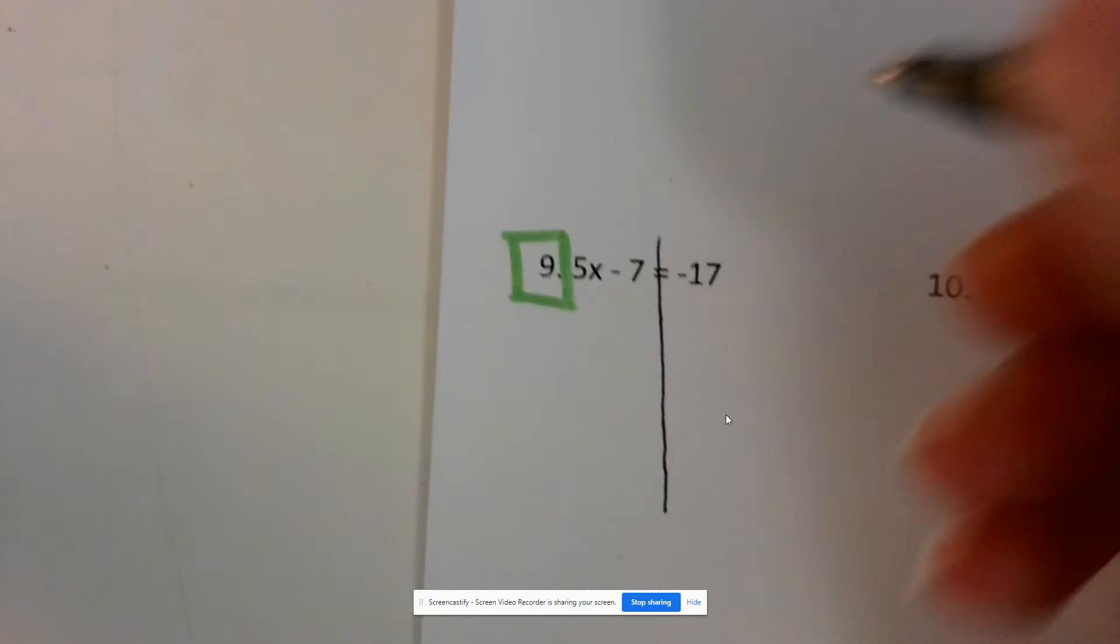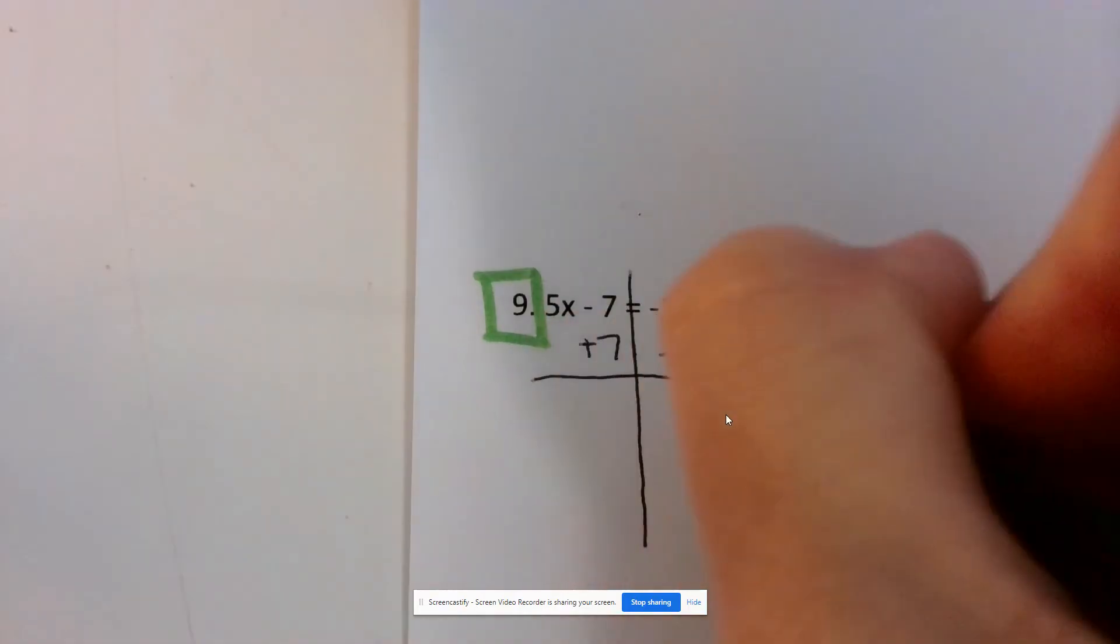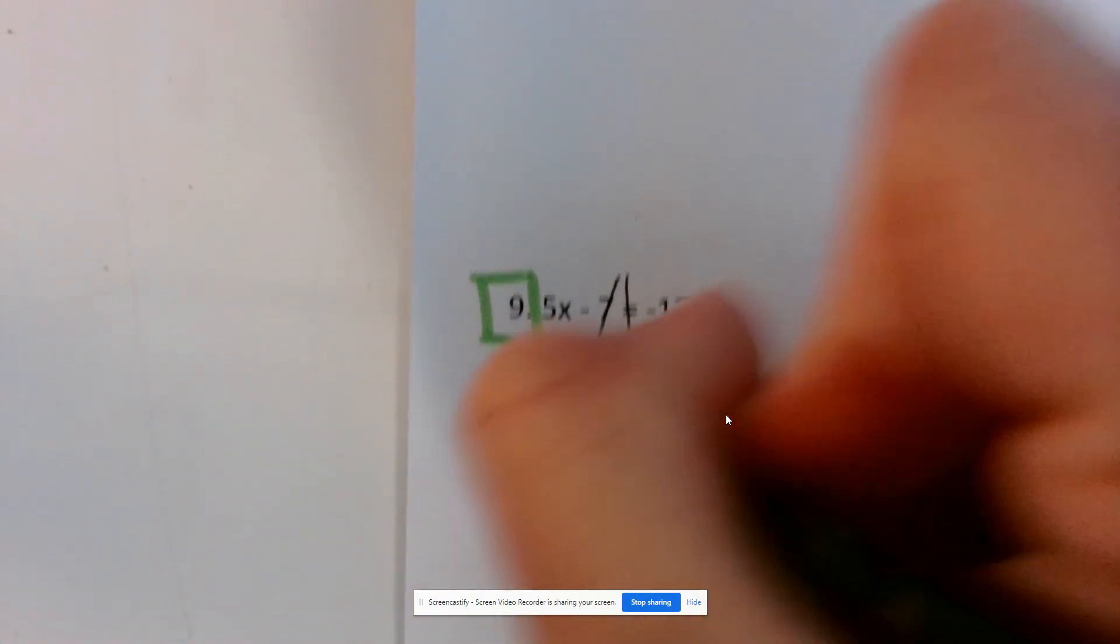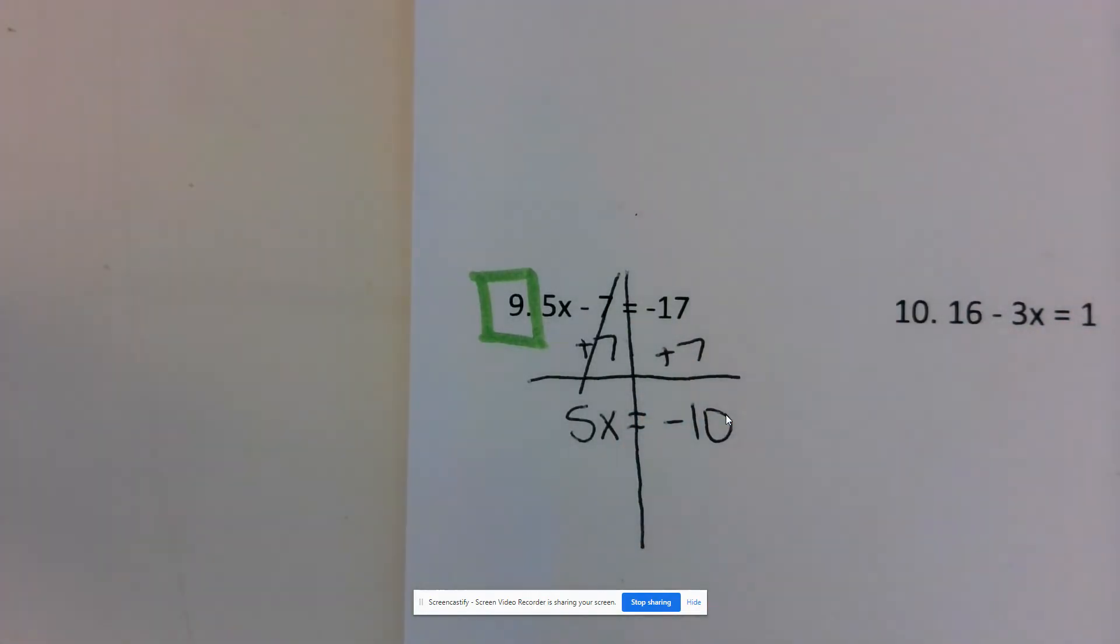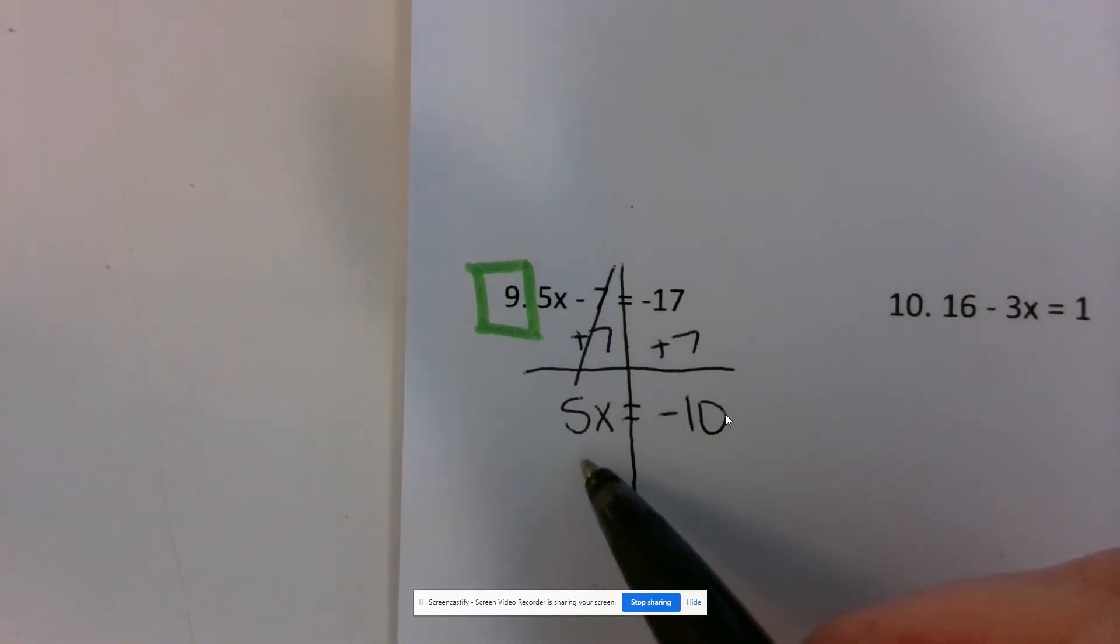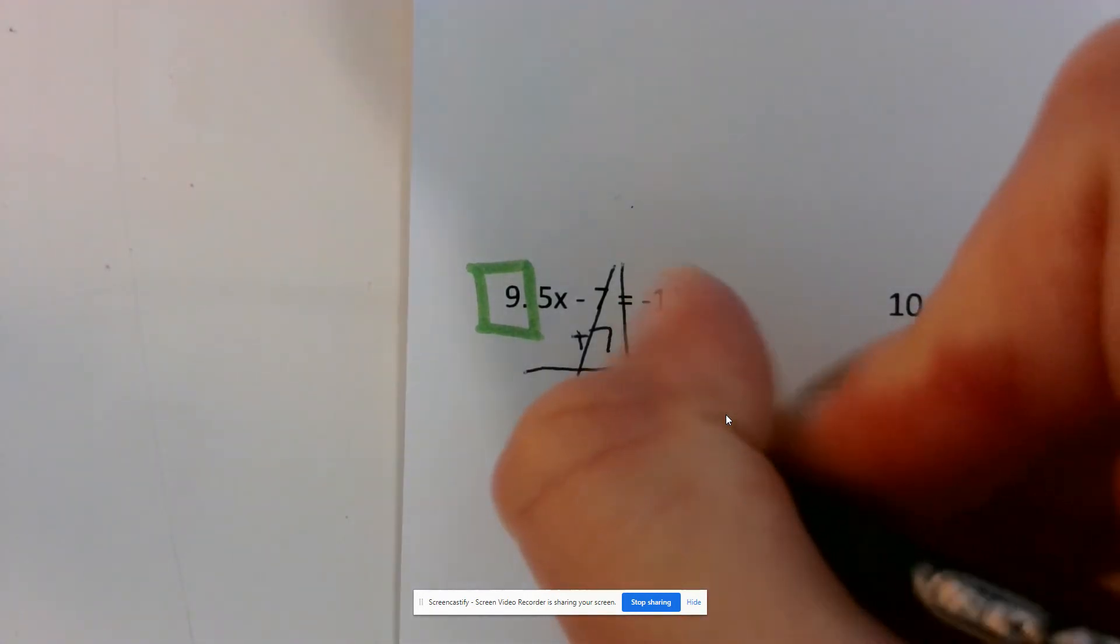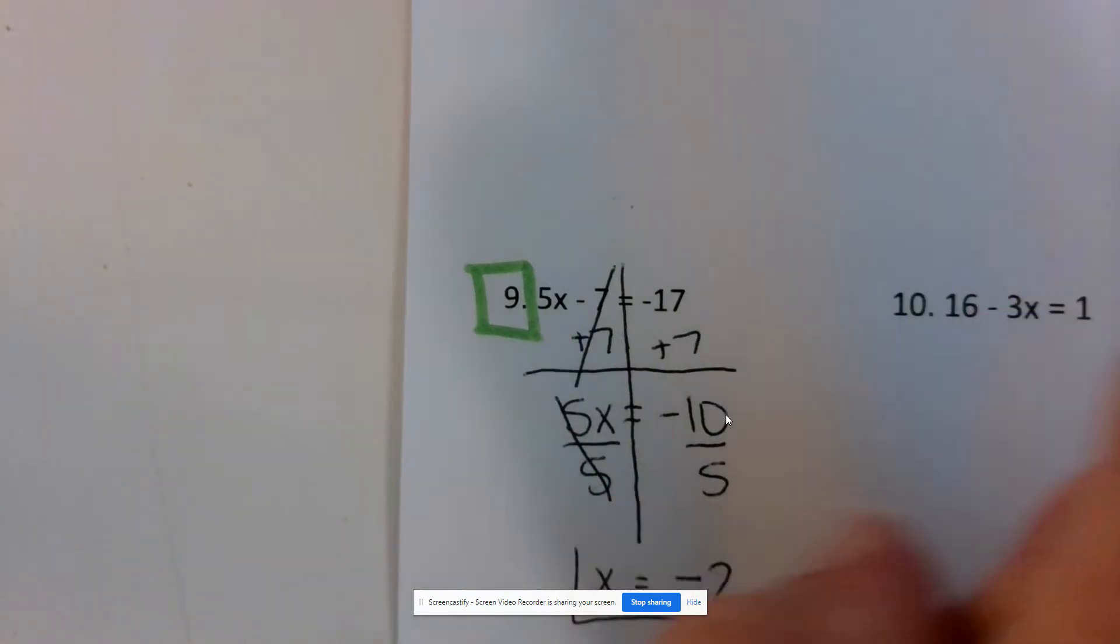To get rid of this minus 7, I need to do the opposite. The opposite of subtracting 7 is adding 7, so I'm going to add 7 to both sides. That causes my 7s to cancel, which is what I wanted. I'm left with 5x equals negative 10. Now this becomes similar to the first one we did. To undo the 5, I need to divide both sides by 5. Negative 10 divided by 5 is negative 2.